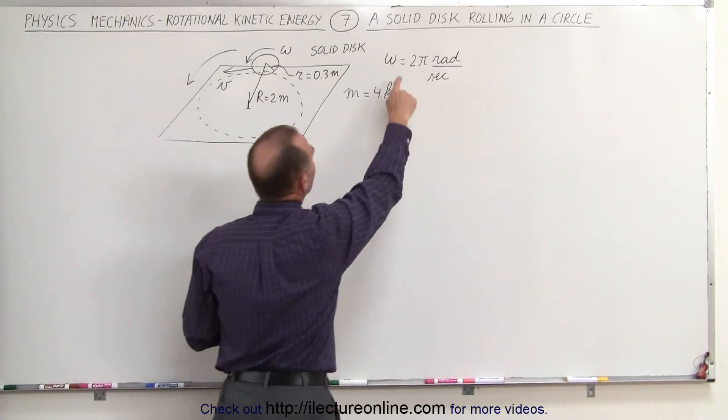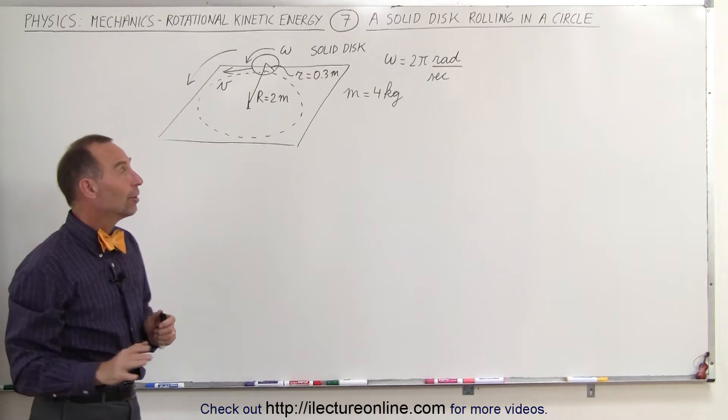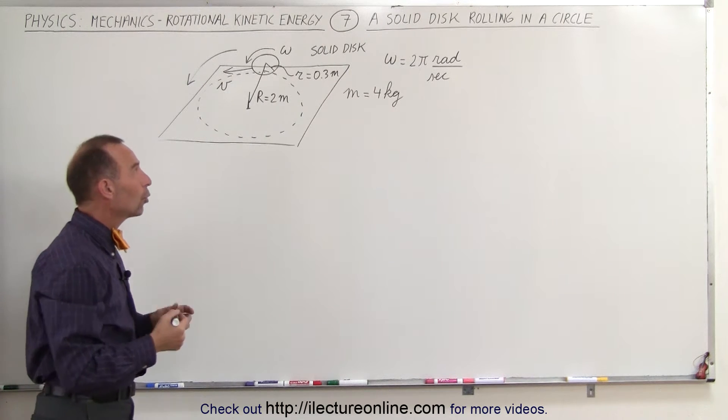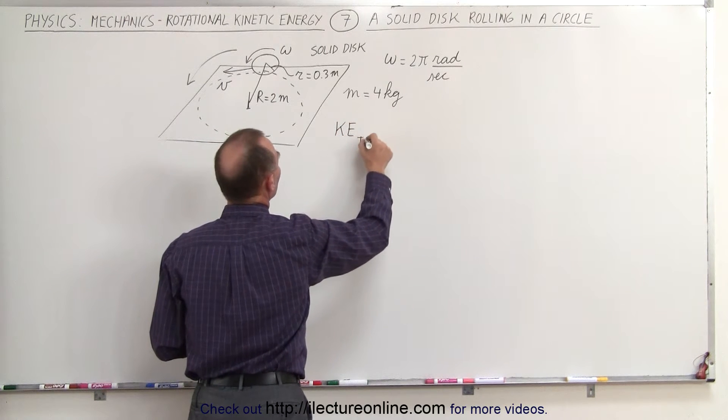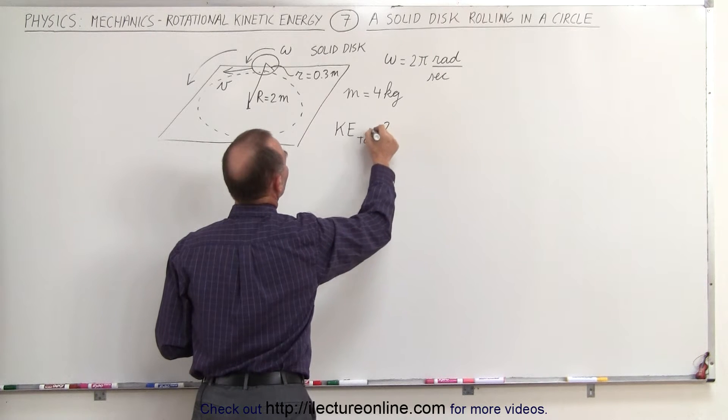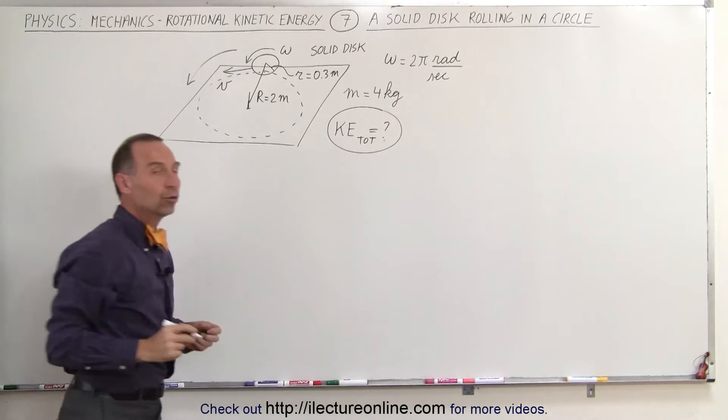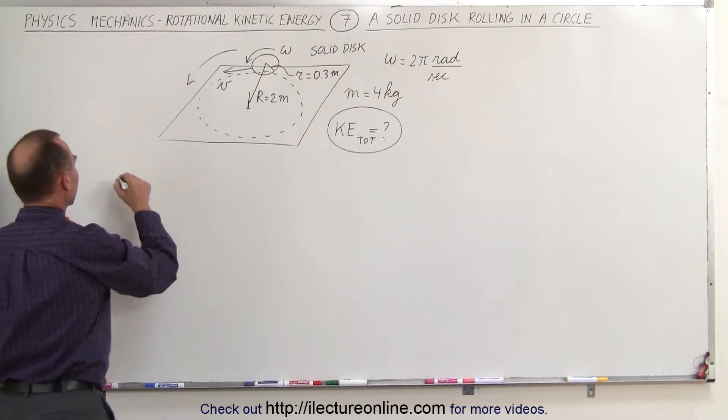And the angular velocity is 2 pi radians per second. Notice that they didn't give you the linear velocity. We'll have to calculate that. So the total kinetic energy, that's what we're trying to find. What is the total kinetic energy of the rolling wheel? And to do that, we need to find both the translational and the rotational kinetic energy.